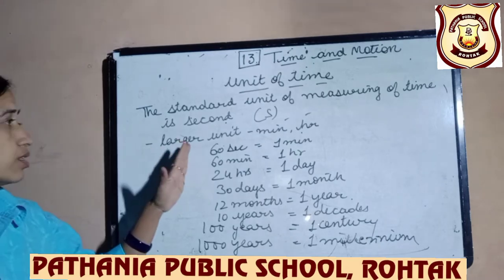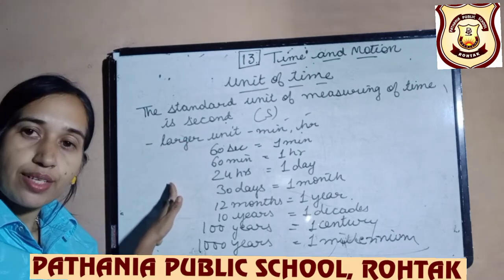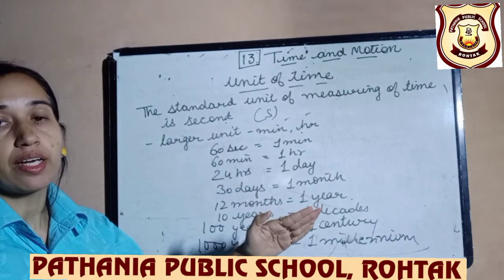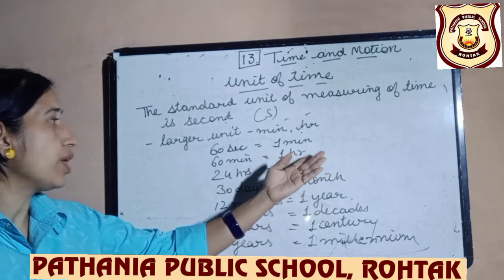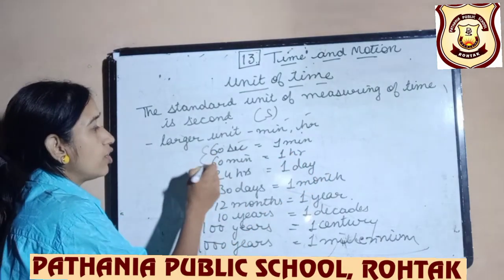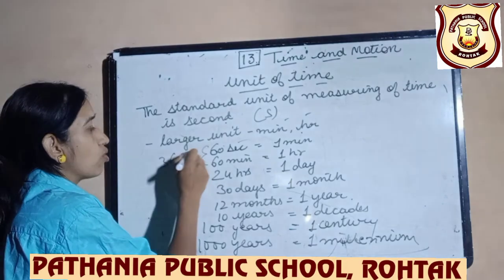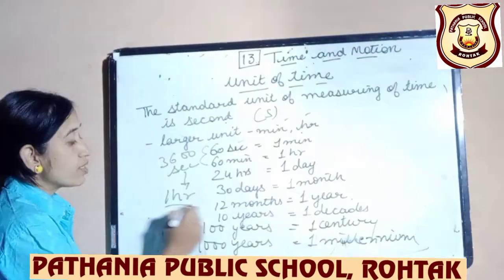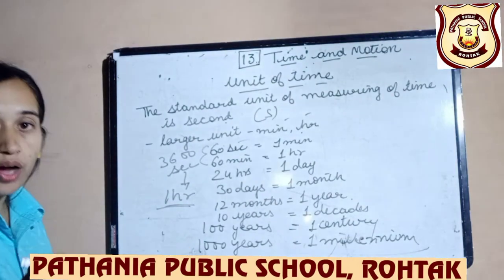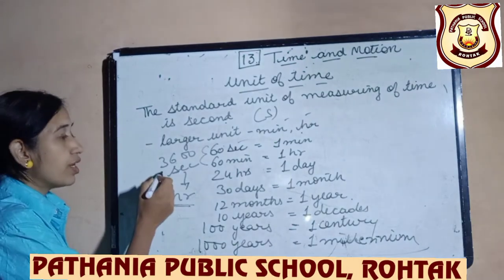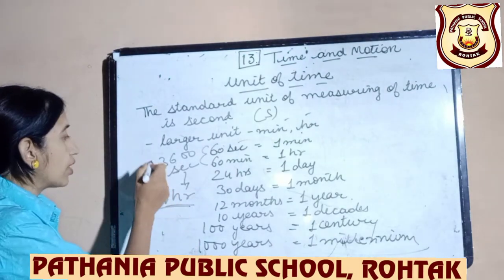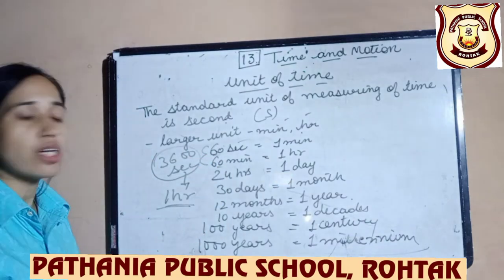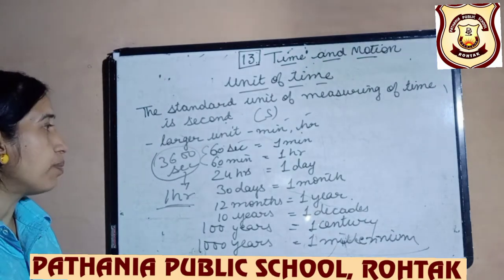These are the conversions — we have done them in previous classes, but let's revise. They help you convert things. For example, if a question asks for seconds in one hour: 60 times 60 equals 3600 seconds in one hour. Such small calculations help us solve the numericals.